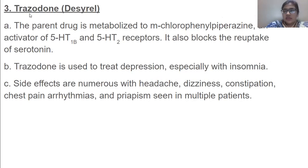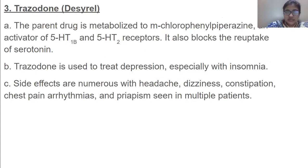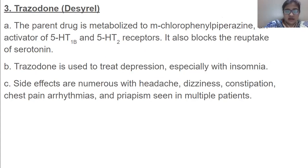Then we have trazodone. The parent drug is metabolized to m-chlorophenylpiperazine, an activator of 5-HT1B and 5-HT2 receptors. It also blocks reuptake of serotonin. Trazodone is used to treat depression, especially with insomnia — an inability to sleep properly. Side effects are numerous, including headache, dizziness, constipation, chest pain, arrhythmia, and priapism, seen in multiple patients.